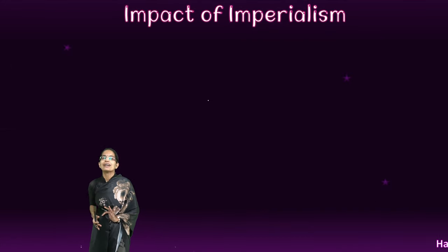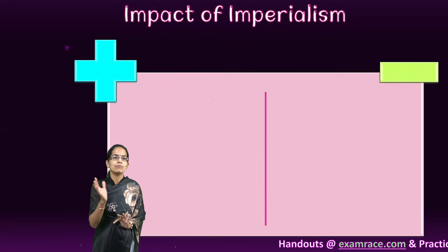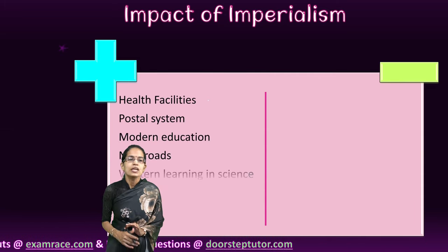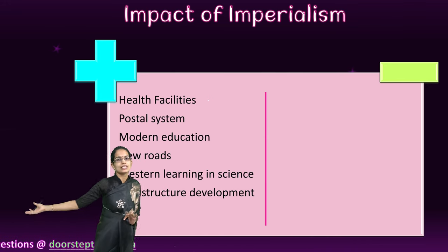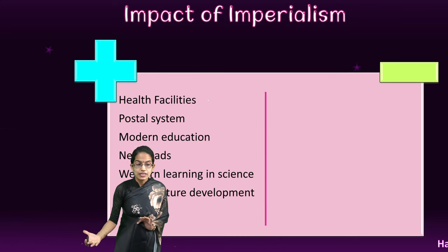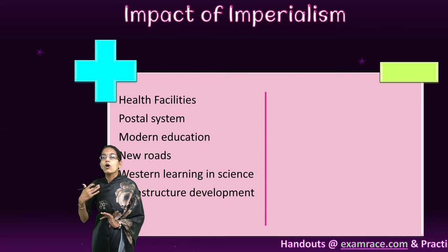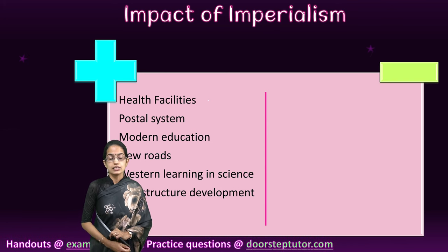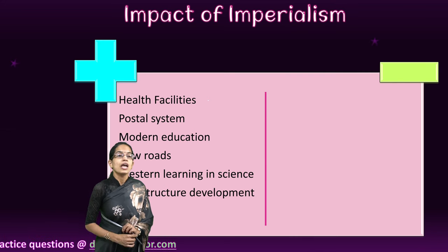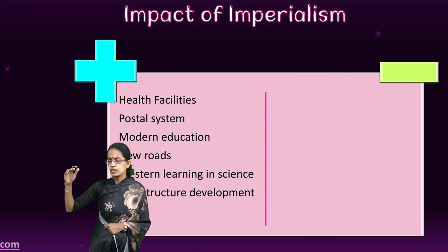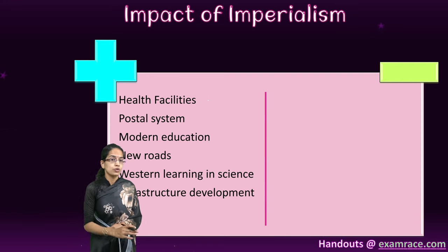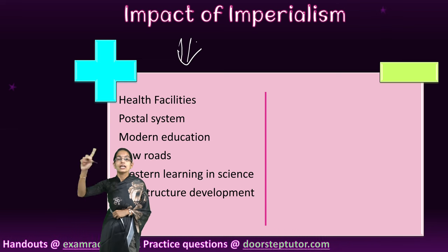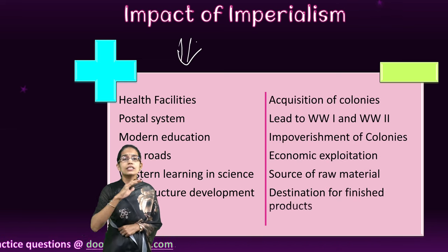The impact of imperialism can be viewed as positive and negative. Positive impacts include, as seen in India, the present-day postal system, railway system, modern system of education, and starting of English as a medium of instruction — developments in education, new roads, new infrastructure, development in science, health, and infrastructure including roads, railways, shipping, and canals. However, there were numerous drawbacks associated with these positive impacts.